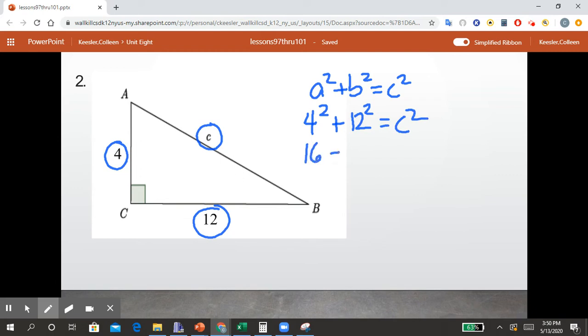We know 4 squared is 16, and 12 squared is 144. Adding those two together, we get 160 equals C squared. Then to get C by itself, we do the square root. And this does not result in a perfect square. So we don't know what number times itself equals 160 because 160 is not a perfect square.